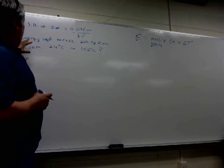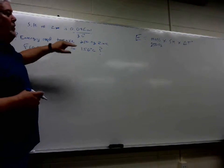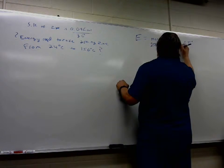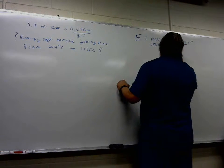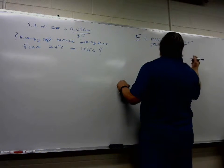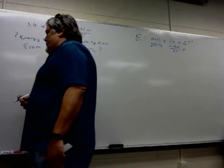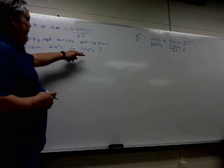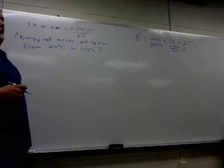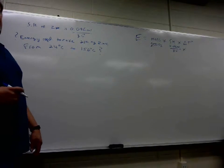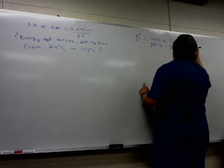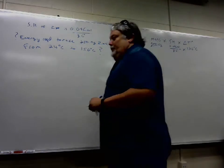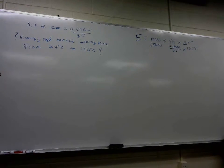What is the specific heat of zinc? It's given to us at the beginning of the problem: 0.096 calories per gram per degree Celsius. Now we need to know the temperature change. The temperature change in this problem is 150 minus 24, which equals 126 degrees Celsius. Everybody got their calculators out and following along?